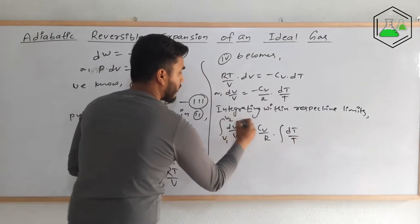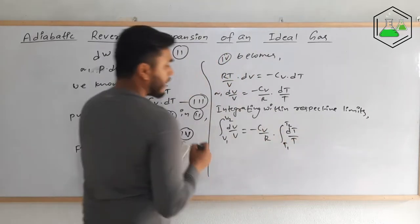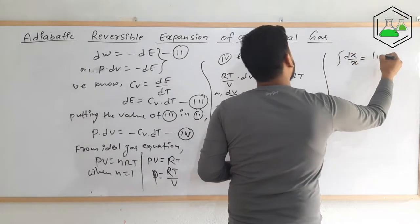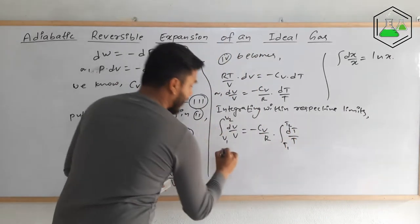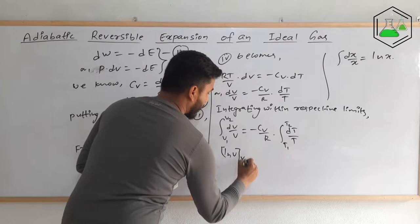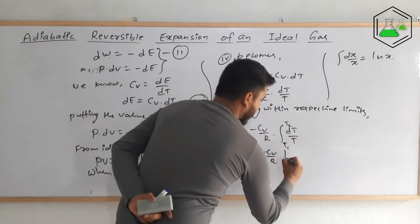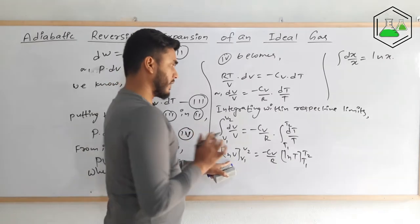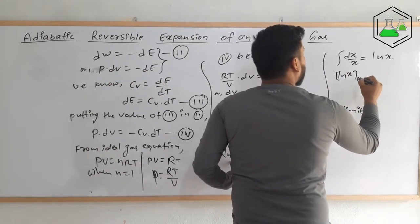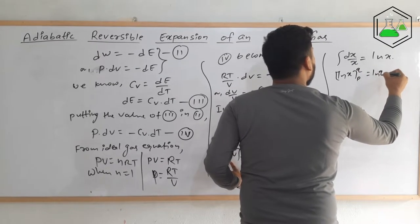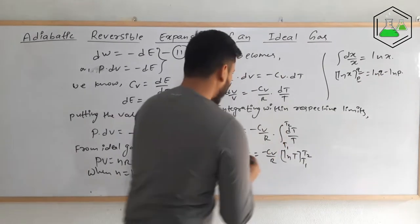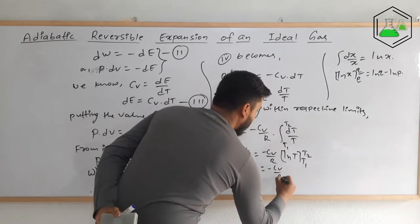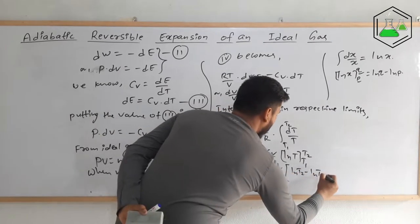The limits are V1 to V2 on the left and T1 to T2 on the right. Since the integral of dx/x is ln x, we get: ln V evaluated from V1 to V2 equals −(Cv/R) times ln T evaluated from T1 to T2. This gives: ln V2 − ln V1 = −(Cv/R)(ln T2 − ln T1).